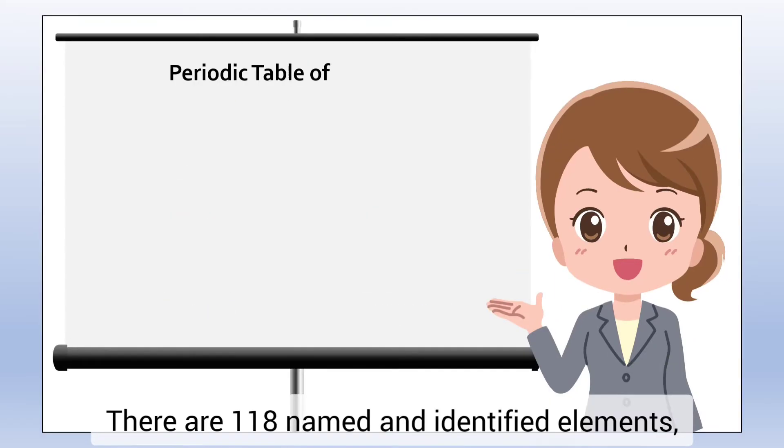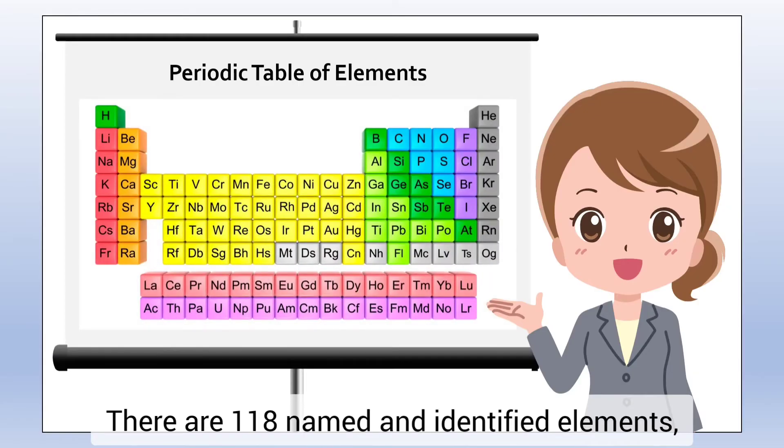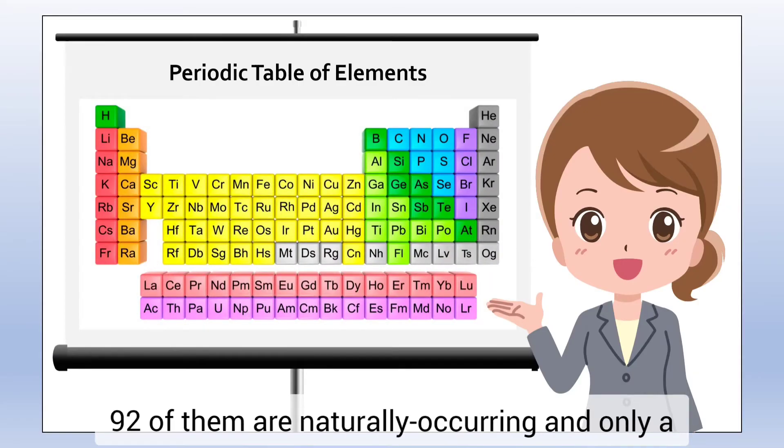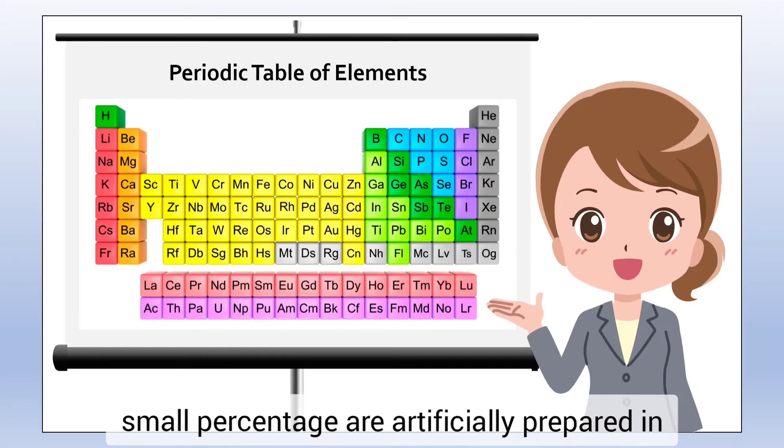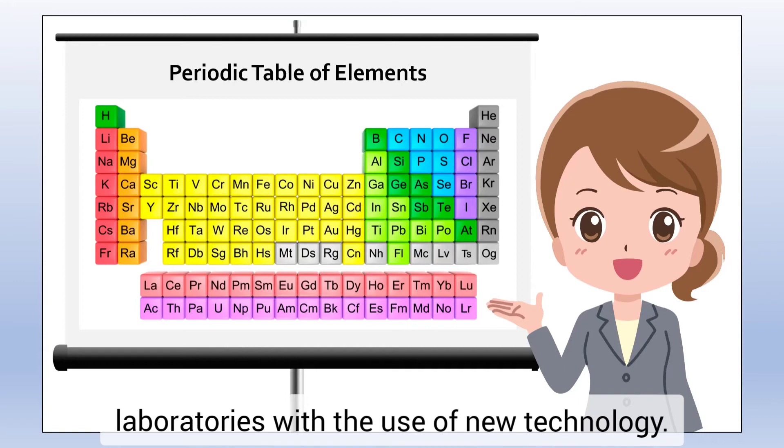There are 118 named and identified Elements. 92 of them are naturally occurring and only a small percentage are artificially prepared in laboratories with the use of new technology.